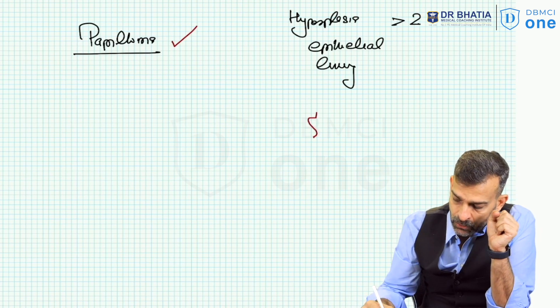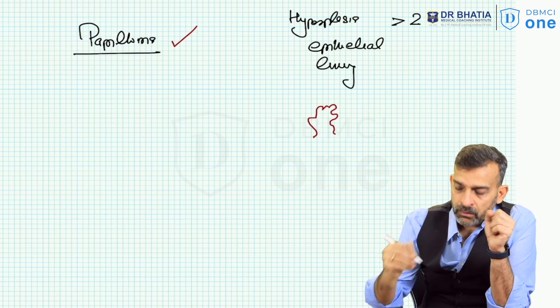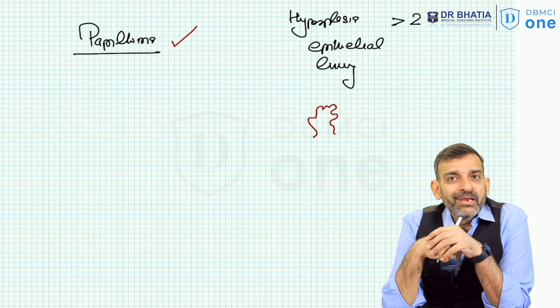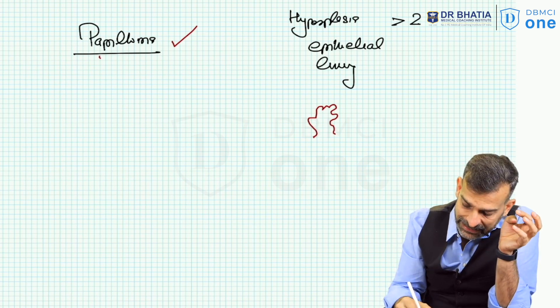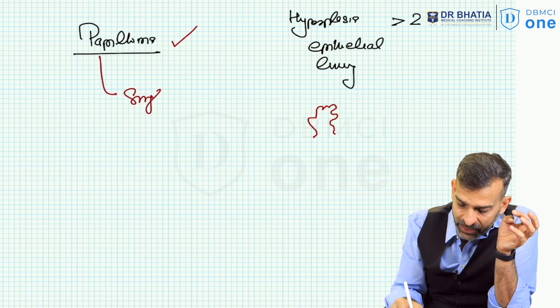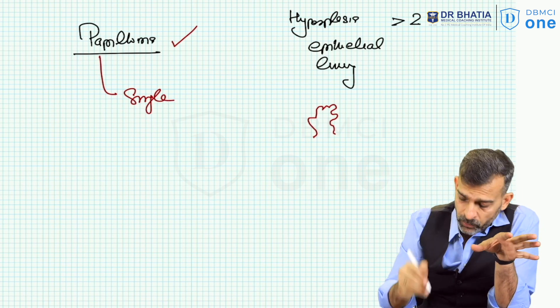A polyp-like growth will pop out from the lining epithelium of the duct. Now, if it is a single type of polyp which pops out, it is called papilloma.